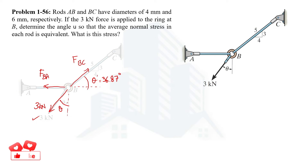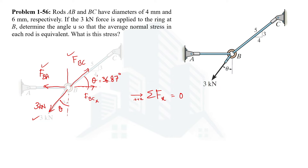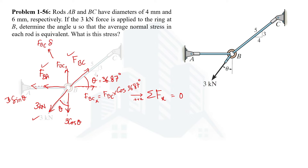Now let's use conditions of equilibrium to find the unknown forces FBA and FBC. Using the first condition of equilibrium — summation of all forces in the x-direction equal to zero, taking rightward as positive — FBC is not purely in the x or y direction, so it must be resolved into its components FBC-x and FBC-y. Similarly, the 3 kN force must also be resolved into components: the vertical component is 3 cos theta and the horizontal component is 3 sin theta.